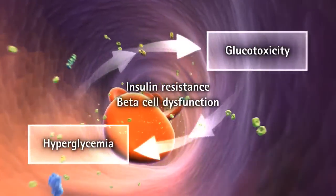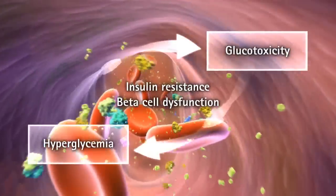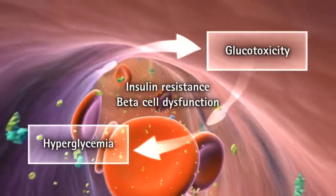In this way, hyperglycemia appears to perpetuate a vicious cycle of deleterious effects that exacerbate type 2 diabetes.